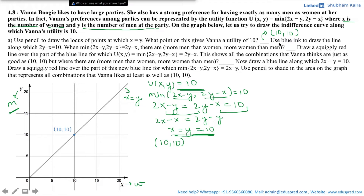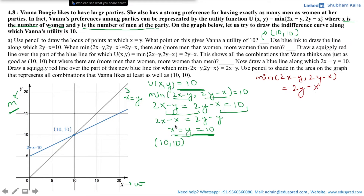Now use blue ink to draw the line along which 2y - x = 10. From basic geometry we can draw this line. This is the line with equation 2y - x = 10. We cannot consider any point on this line apart from (10, 10) for the equal men and women case, since at (10, 10) both men and women are equal.